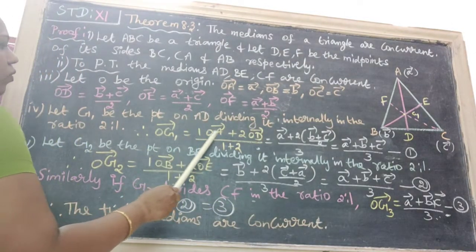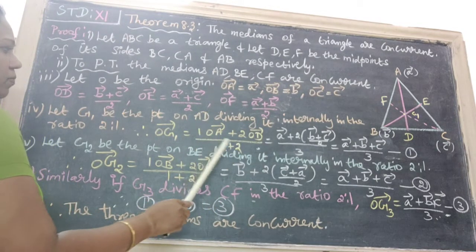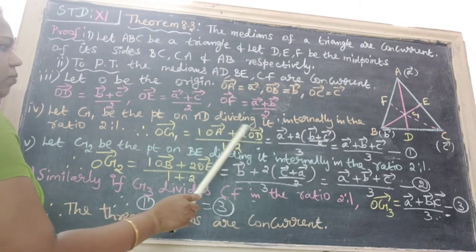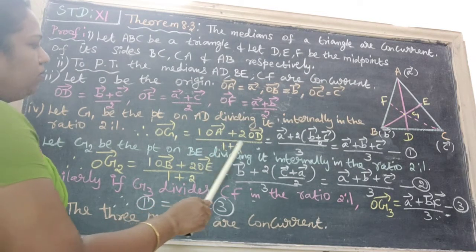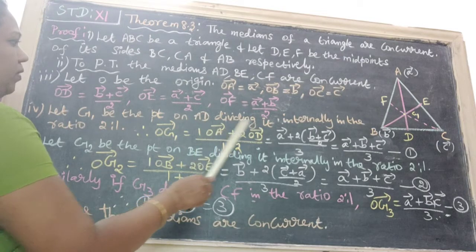Now, OG1 vector equals 1·OA vector plus 2·OD vector divided by 1 plus 2. The formula is N·A vector plus M·B vector divided by N plus M. Applying the ratio formula with OA vector and OD.